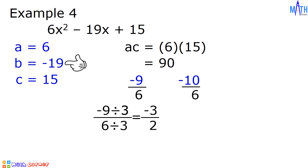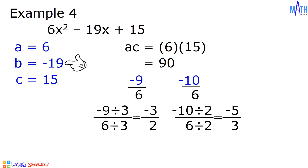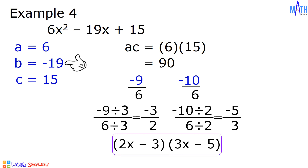For negative 10 over 6, we will divide the numerator and denominator by 2, since 2 is the greatest common factor. Negative 10 divided by 2 is equal to negative 5, and 6 divided by 2 is equal to 3. So the lowest term of negative 10 over 6 is negative 5 over 3. Let us write the factors: for negative 3 over 2, we have 2x minus 3, and for negative 5 over 3, we have 3x minus 5. And these are the factors of 6x squared minus 19x plus 15.